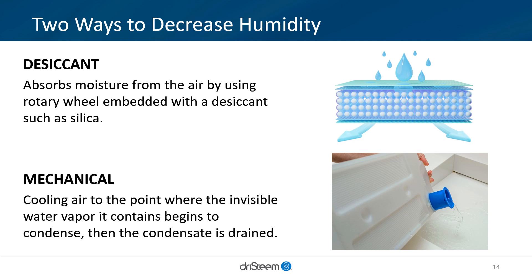When you need to decrease the RH, you can choose between two dehumidifier technologies: desiccant and mechanical. Desiccant dehumidification absorbs moisture from the air by using a wheel embedded with a substance that absorbs water and promotes drying. Mechanical dehumidifiers cool the air to a point where the invisible water vapor it contains begins to condense, then the condensate is drained. Typically application requirements determine the technology used. Desiccant dehumidification is more effective in cooler temperatures, whereas mechanical dehumidifiers work best in warmer temperatures.